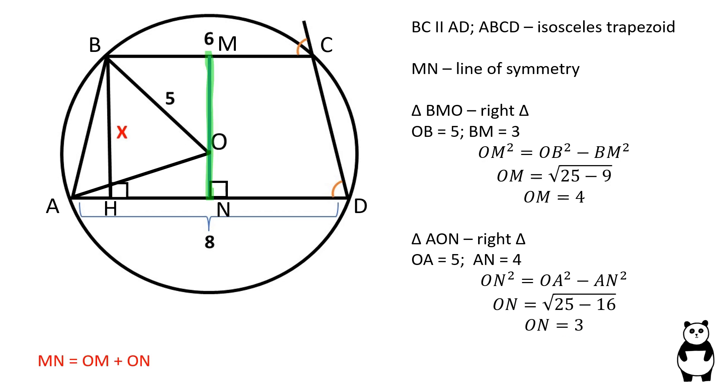MN is equal to OM plus ON, which is 7. And since MN is equal to BH, X is also equal to 7.